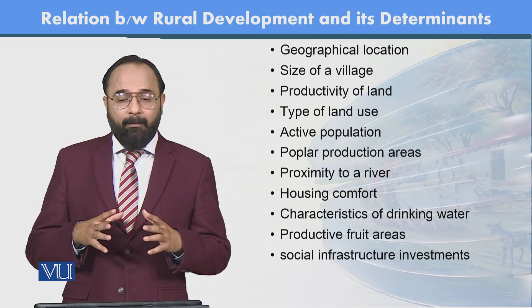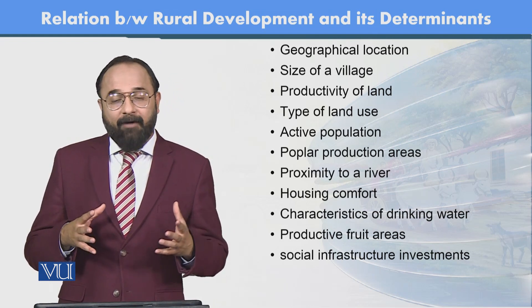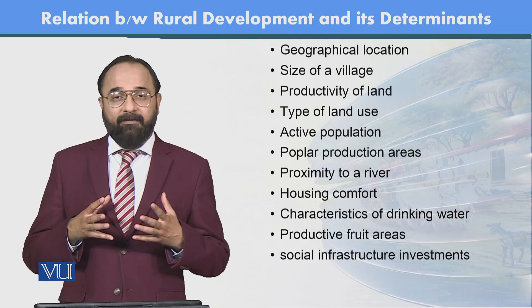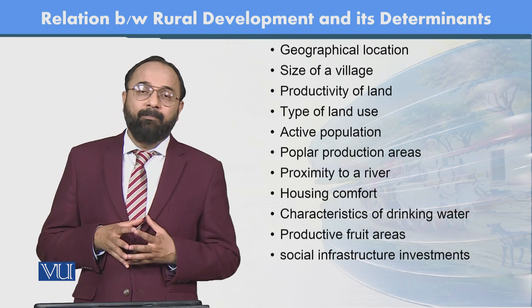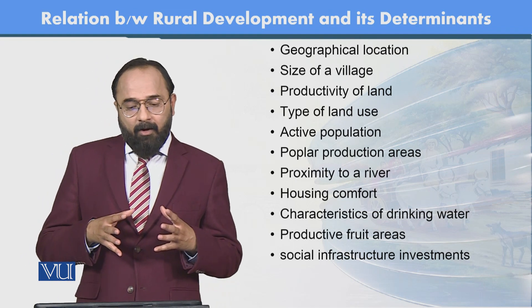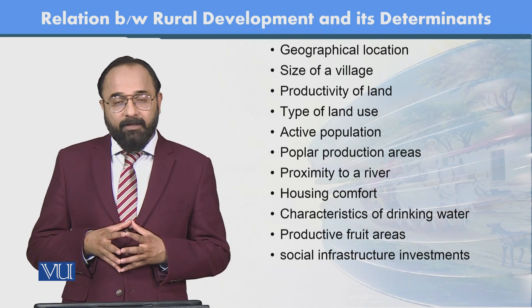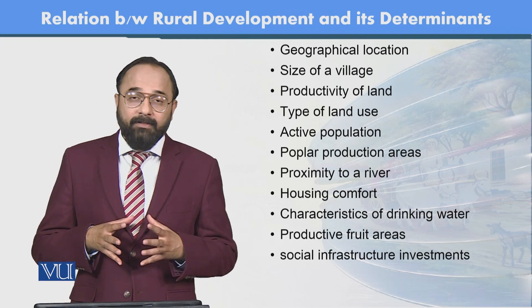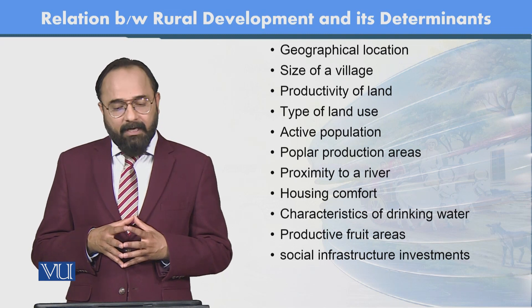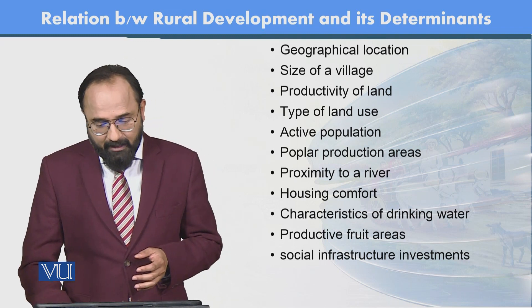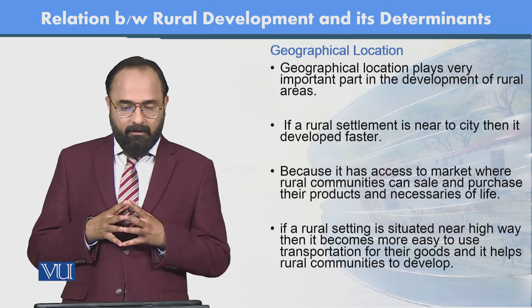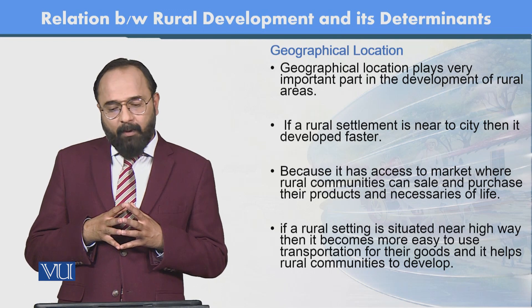The determinants of rural development include: geographical location, size of village, productivity of land, type of land use, active population, popular production area, proximity to a river, housing comfort, characteristics of drinking water, productive fruit area, social infrastructure, investments, and geographical area.